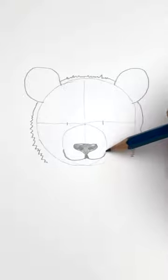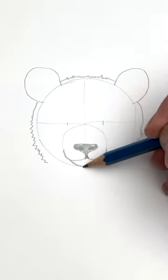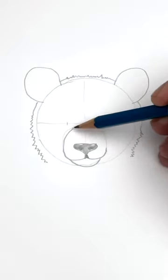Two curved lines for the top of the mouth and the bottom of the circle is the bottom of the jaw. A couple more lines and now you have the nose.